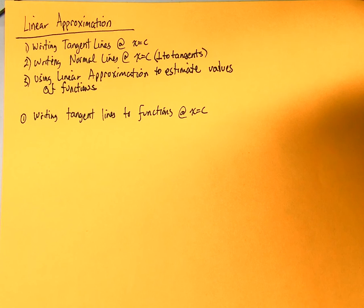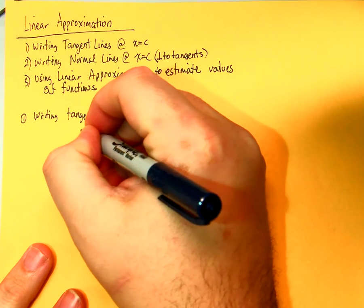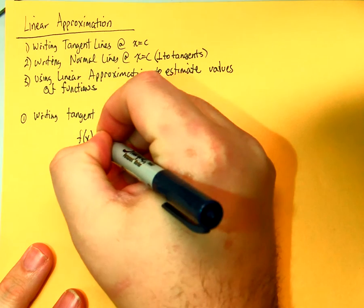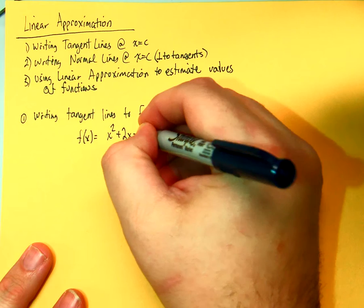Now, we're going to first start talking about tangent lines. Now, let's say you have f of x is equal to x squared plus 2x plus 4.